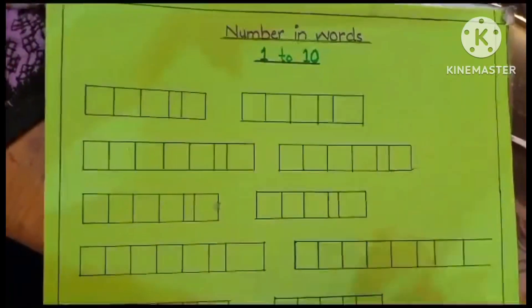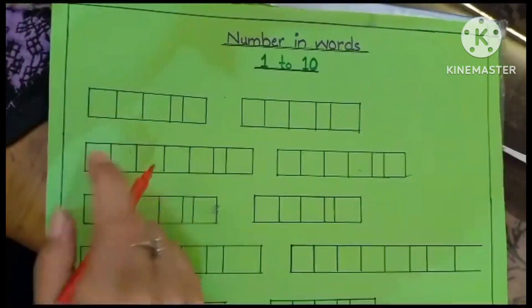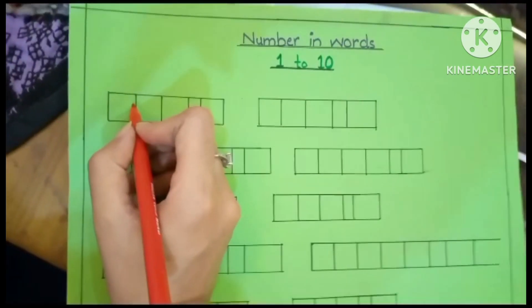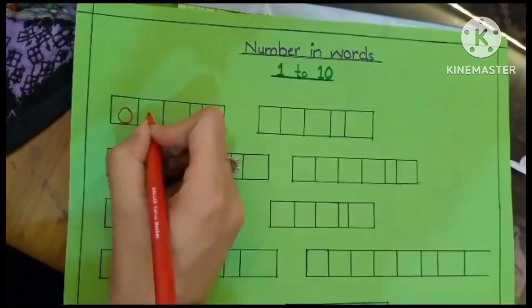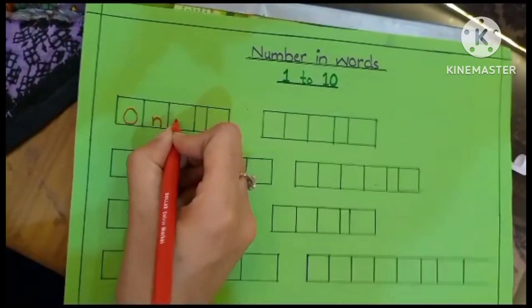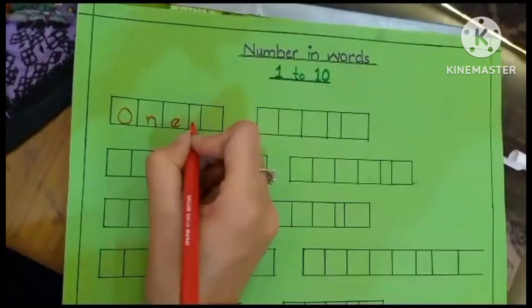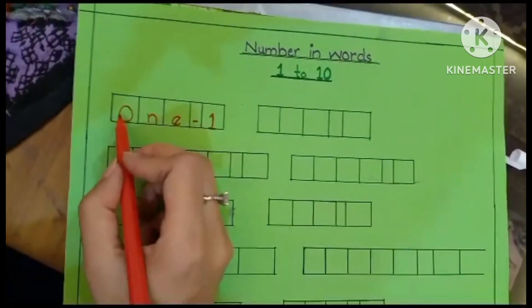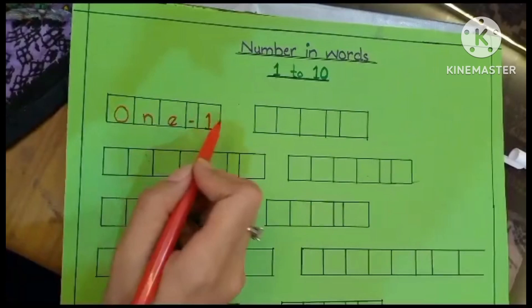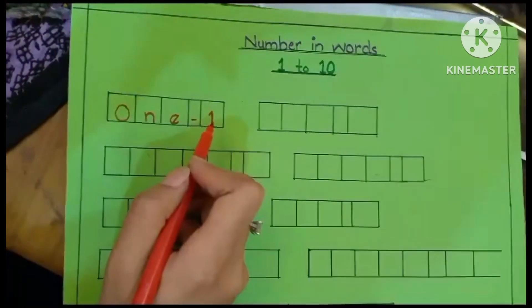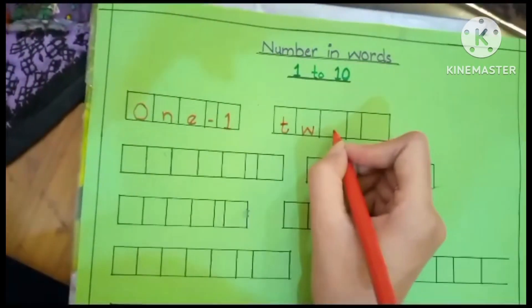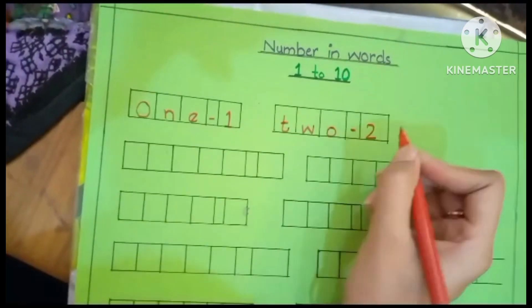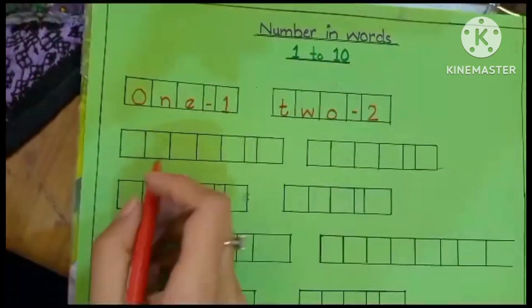Okay, I'm going to write the number one. Now what's the spelling of one? O-N-E, one. Now what's the spelling of two? T-W-O, two. Now three.